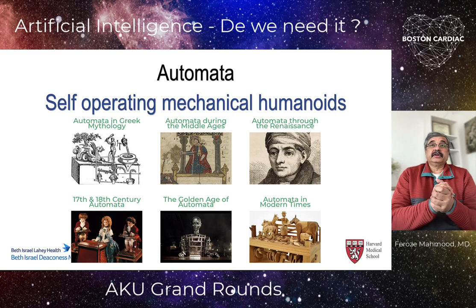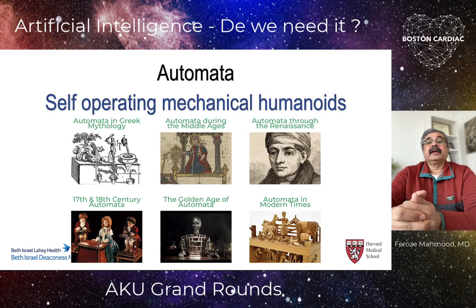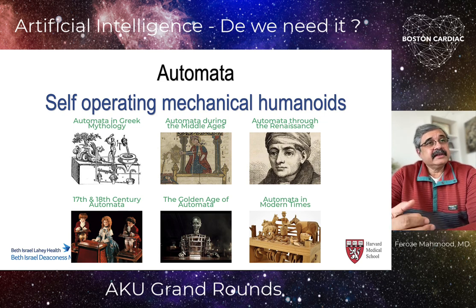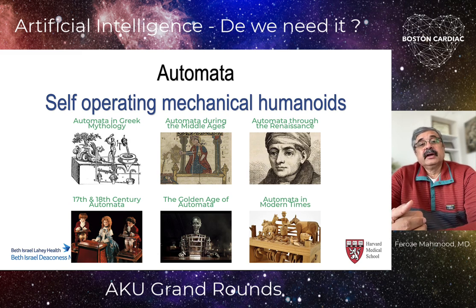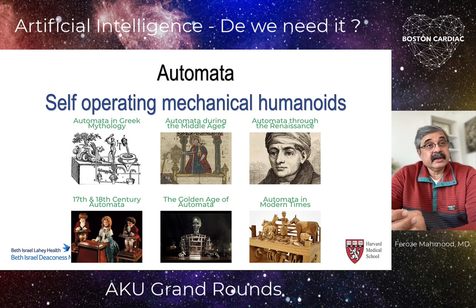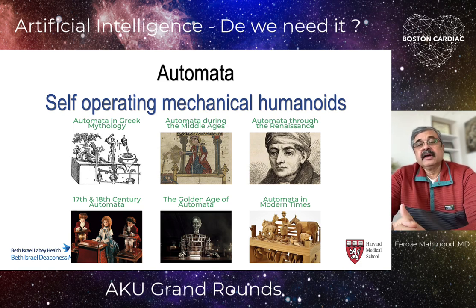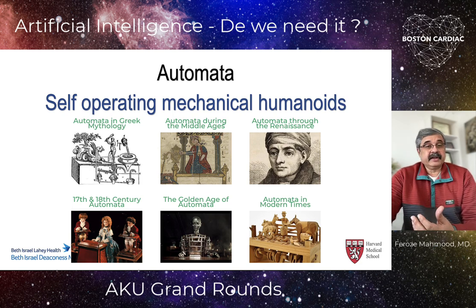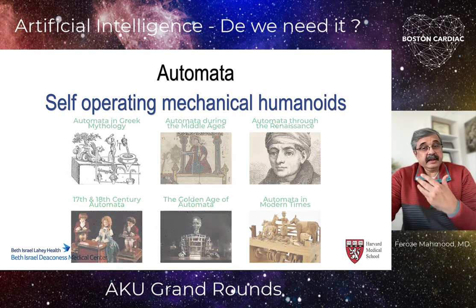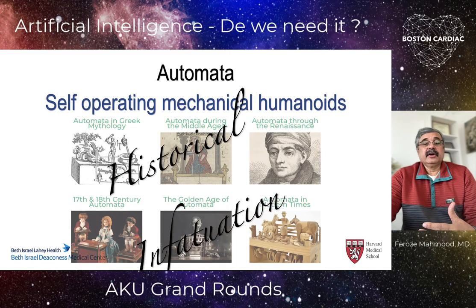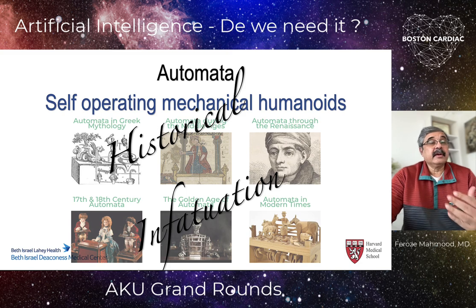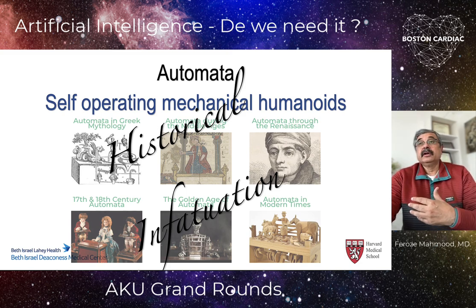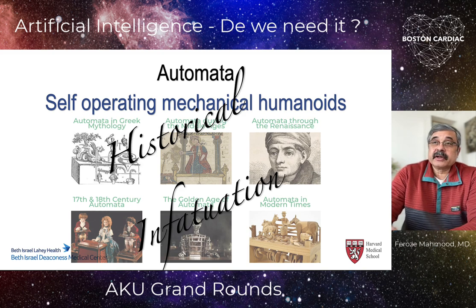Let's go over the history of artificial intelligence — it's older than you think. First is automata: historically self-operating mechanical humanoids that have been a fascination of civilizations through history. Automata appear in Greek mythology, during the Middle Ages, during the Islamic Renaissance, through the Christian Renaissance, in the 18th century, and now in the golden age of the last hundred years. The fascination of having things that work on their own is an old historical fascination, not something new.